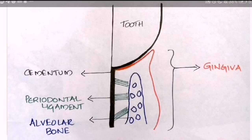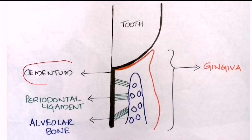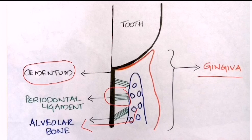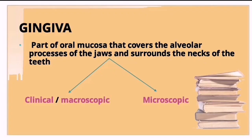Here is a picture showing the periodontium and its four components: cementum, periodontal ligament, alveolar bone, and gingiva. In today's video we are discussing in detail about gingiva, which is that part of the oral mucosa that covers the alveolar processes of the jaws and surrounds the neck of the teeth.